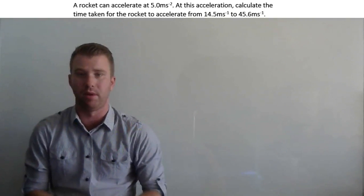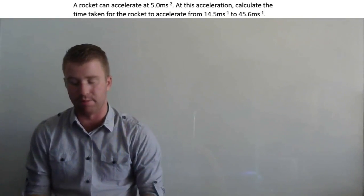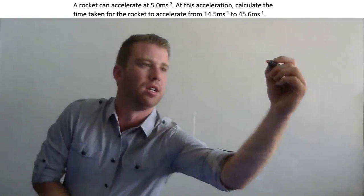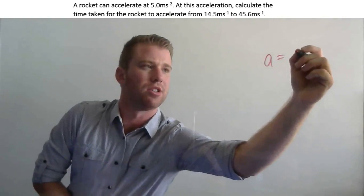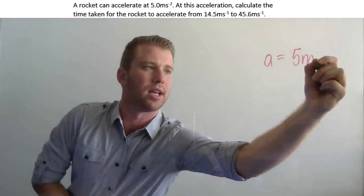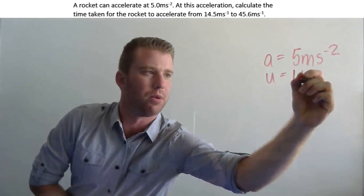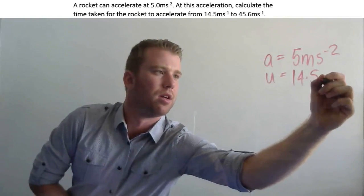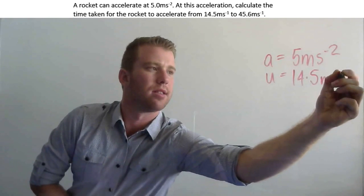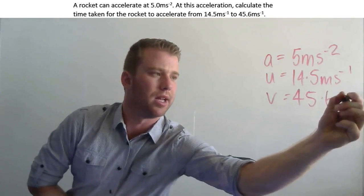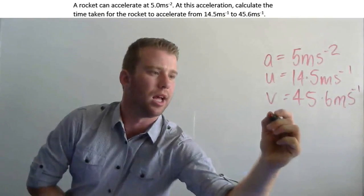I'd like to demonstrate my working out to the marker. The first thing I'm going to do is write all the variables that I've got. Acceleration is 5 meters per second squared, u is 14.5 meters per second, v is 45.6 meters per second, and we don't know time.